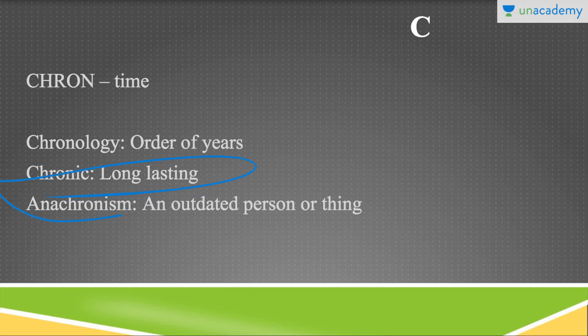Anachronism means an outdated person or thing. Now a quick test for you: in the previous two alphabets A and B, I had used two words where the meaning was outdated or old-fashioned. You need to go back to those lessons, find those two words, and tell me. I know I'm giving you a lot of homework, but trust me it's for a good cause.